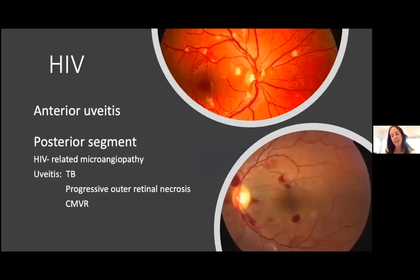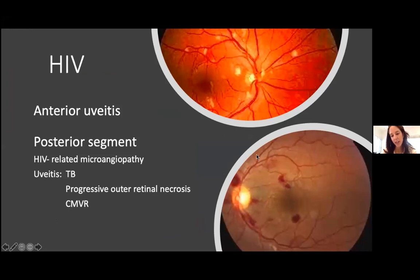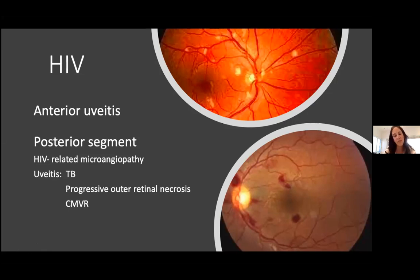HIV can cause anterior uveitis, generally non-granulomatous, often attributed to drugs like rifabutin. In the posterior segment, we get HIV-related microangiopathy — one of very few differentials where we see cotton-wool spots, nerve fiber layer infarctions, microaneurysms, and hemorrhages in the absence of exudation, unlike a diabetic. Then we get uveitis from opportunistic infections — TB, progressive outer retinal necrosis (PORN), and CMV retinitis — which we'll discuss.